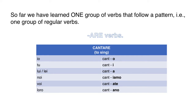Then I add endings — those are the ones we memorized. The ending for io is -o, for tu is -i, for lui/lei is -a, for noi is -iamo, for voi is -ate, for loro is -ano. So: io canto, tu canti, lui/lei canta, noi cantiamo, voi cantate, loro cantano.